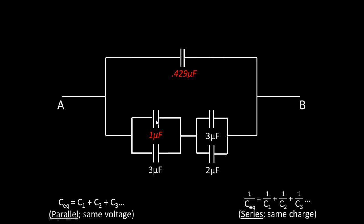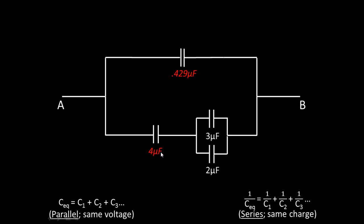Now we see that this one microfarad capacitor is in parallel with this three microfarad capacitor. That means we can just go ahead and add these: 1 + 3 = 4 microfarads. We replace this network with the equivalent capacitor of 4 microfarads. This next branch is also in parallel — the three microfarad capacitor is in parallel with the two microfarad capacitor. So 3 + 2 = 5 microfarads, and we replace that branch with a 5 microfarad equivalent capacitor.